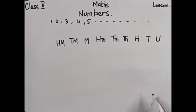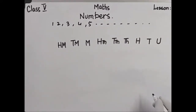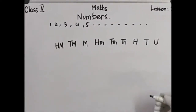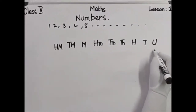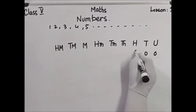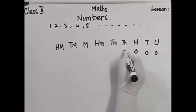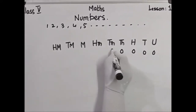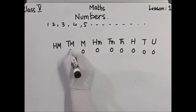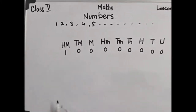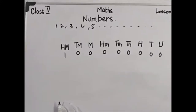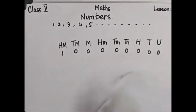When we put a digit for the smallest nine-digit number, we place it like: zero, zero, zero, zero, zero, zero, zero, and one. It is one hundred million.